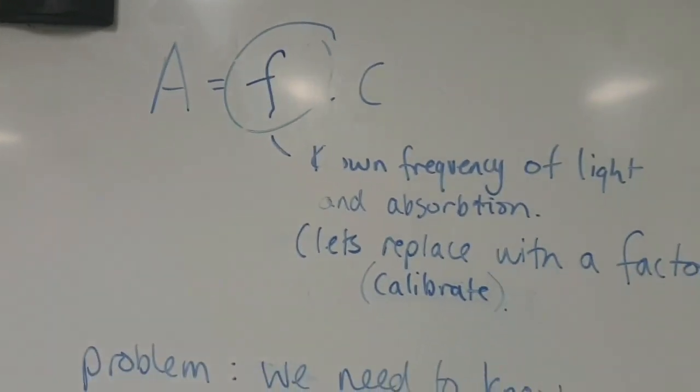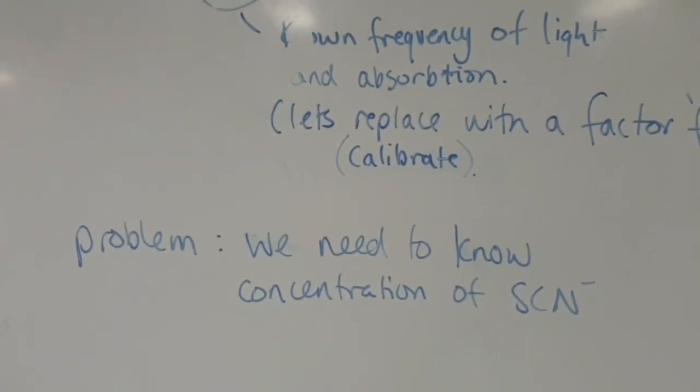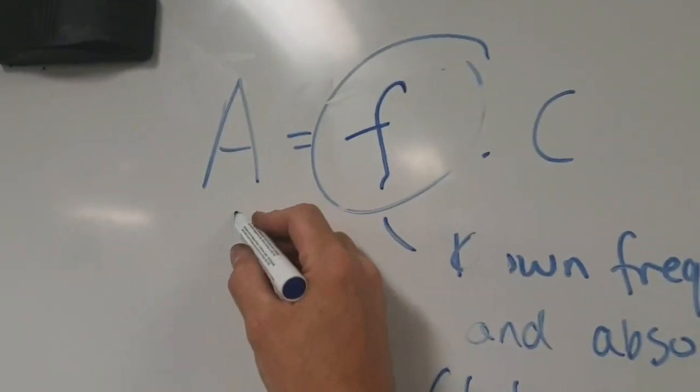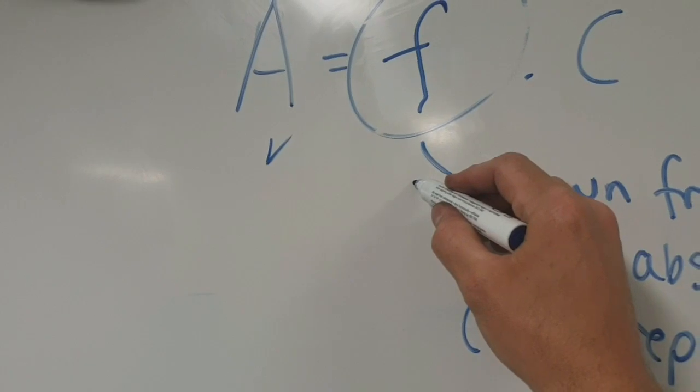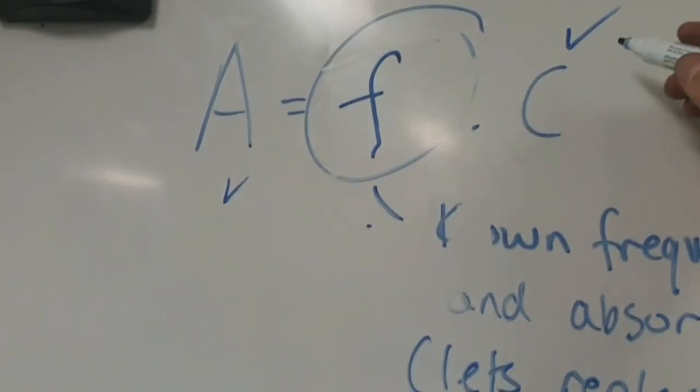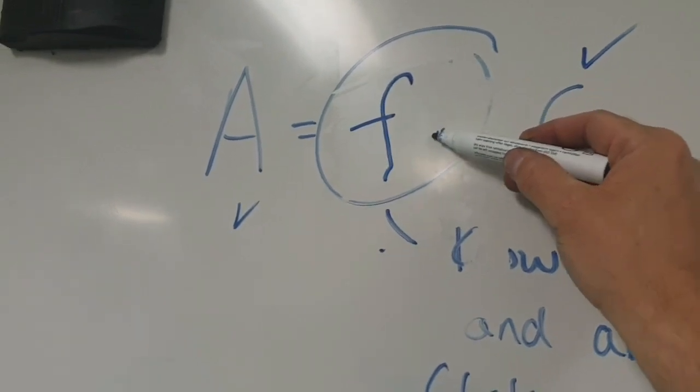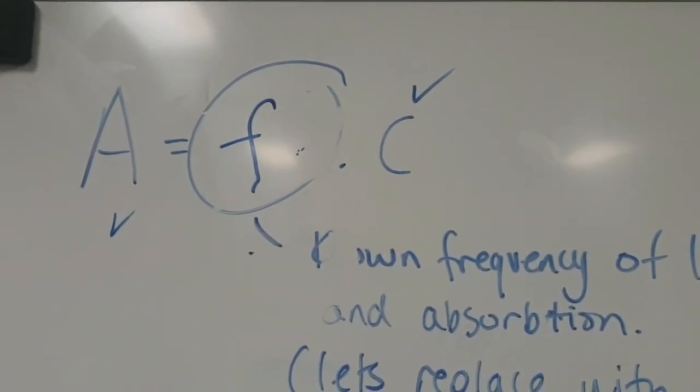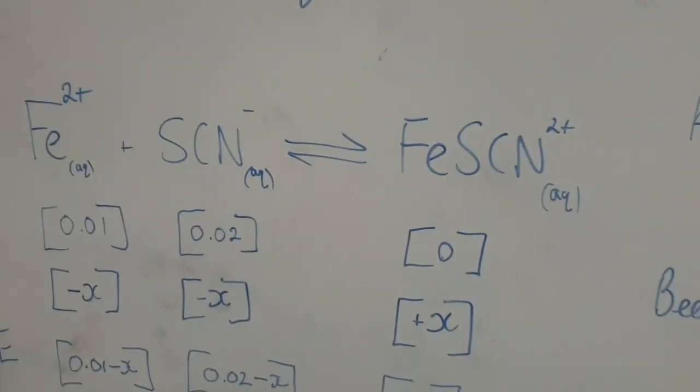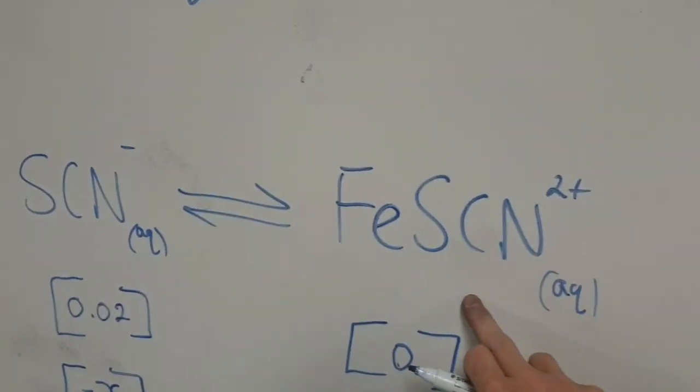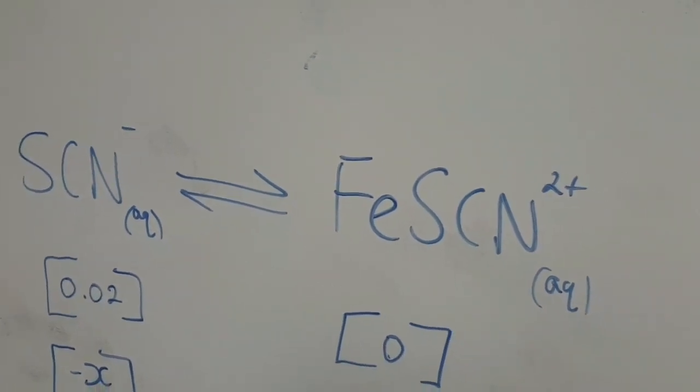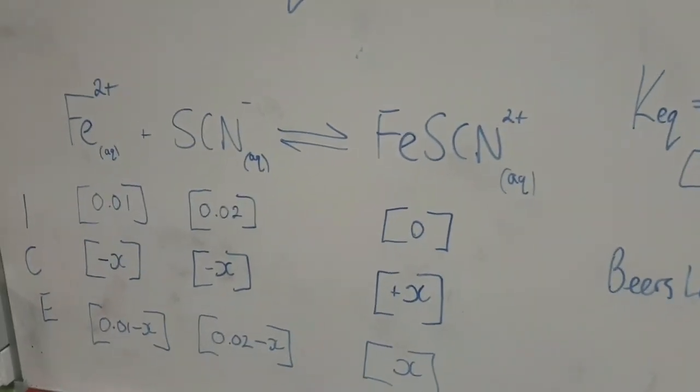Once we know the F factor, we can come back and we can then solve for the concentration. We can determine the absorbency, and we already know the concentration, so we'll be able to find F. And then, once we find F, we can do this all over again to find the concentration of our sample at equilibrium. Now, there is a problem with this, because if you look here, we need to know, we need to do this initial calibration with a known amount of iron thiocyanate. Isn't that the whole problem that we're trying to find?